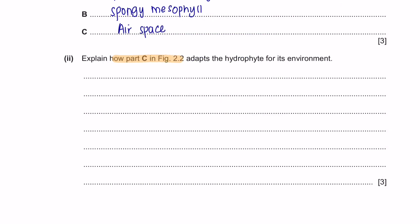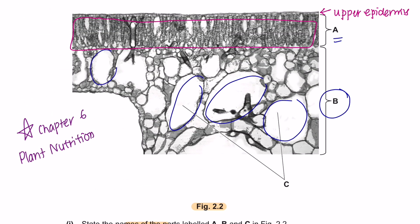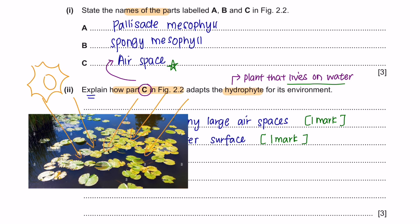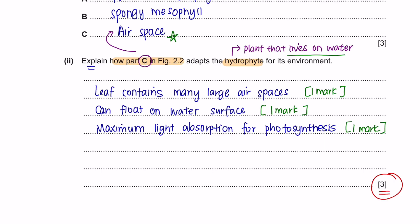Question Part 2. Explain how Part C in figure 2.2, which is the air space, adapts the hydrophite for its environment. As mentioned previously, hydrophite are plants that live on water. So, we are required to explain how the air space in the leaf helps this plant live on water. So, as we can see on figure 2.2, the leaf contains many large air spaces. Mentioning this can give you your first mark. These large air spaces will help the leaf to float on the water's surface. Since this plant lives on water, this adaptation is very important for its environment. So, you can obtain another mark mentioning this. And lastly, when the leaves are on the surface of the water, this can maximize the light absorption from the sun for photosynthesis to take place. Always pay attention to the number of marks given in your question to know exactly the minimum points that you should have in your answer space.